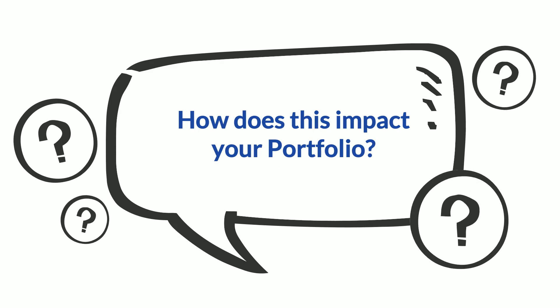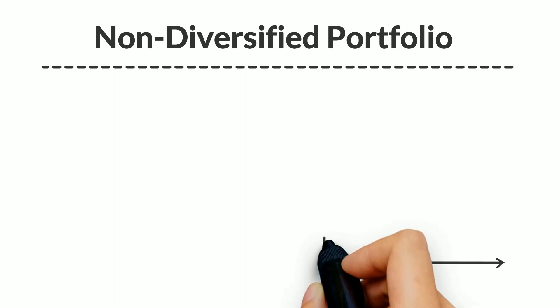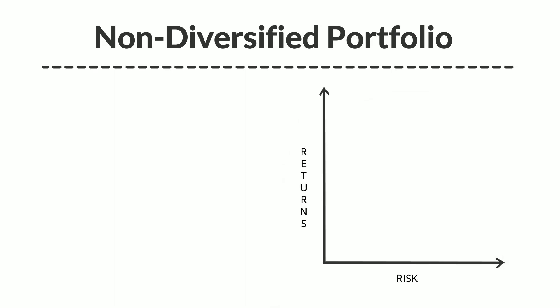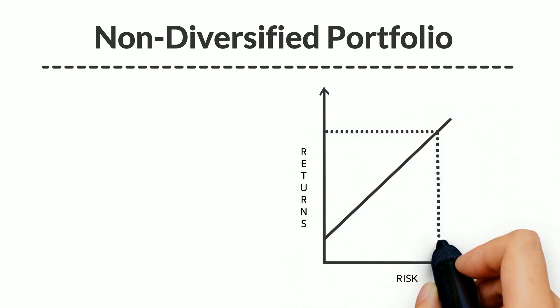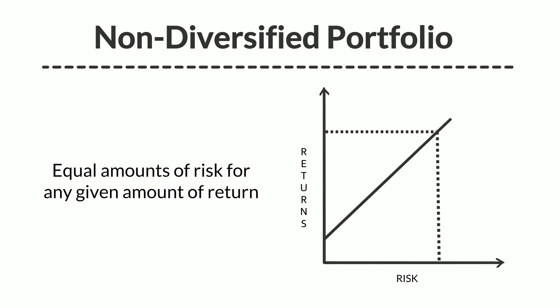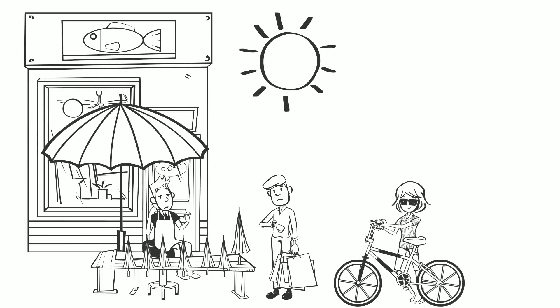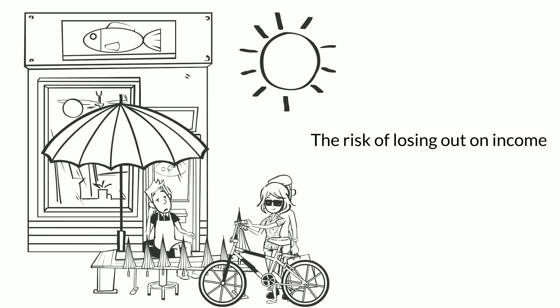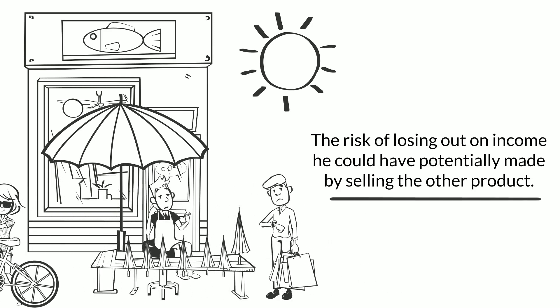Allow us to illustrate through a graph. Say the X-axis depicts your risk and the Y-axis depicts your returns. The first graph is that of a non-diversified portfolio. It shows the relation between risk and return, wherein the fund manager would have to encounter equal amounts of risk for any given amount of return. As we explained in the earlier example, if the street vendor sells only one kind of product, he undertakes the risk of losing out on income he could have potentially made by selling the other product.